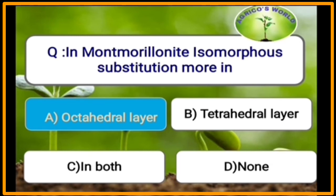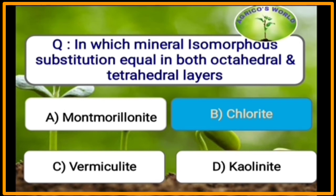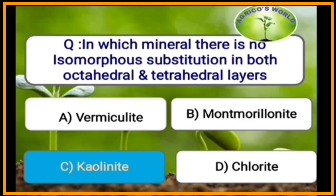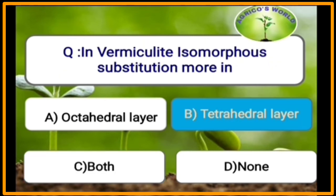In montmorillonite, the octahedral layer has more isomorphous substitution. In chlorite, isomorphous substitution is equal in both octahedral and tetrahedral layers. In kaolinite, there is no isomorphous substitution in either layer. In vermiculite, isomorphous substitution is more in the tetrahedral layer.